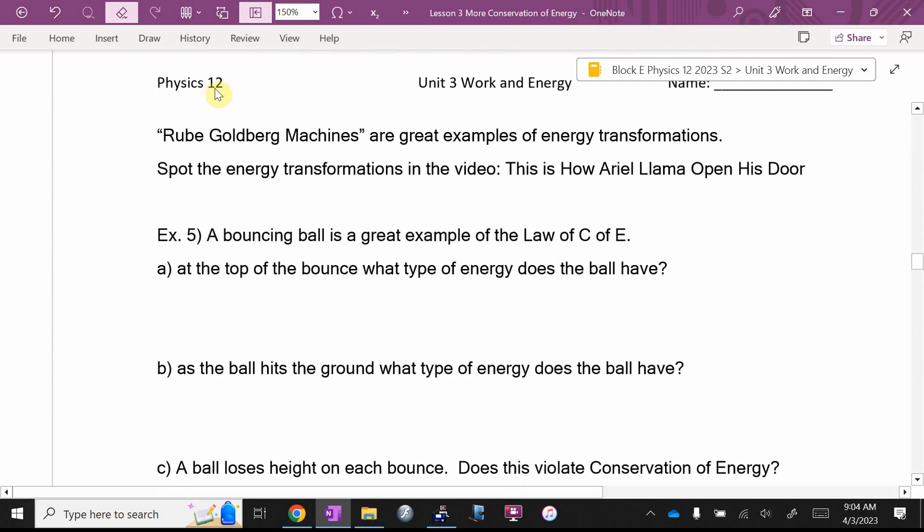Rube Goldberg machines are great examples of energy transformations. A Rube Goldberg machine or a chain reaction machine is, well, something like this. Put your pencils down. Look up.